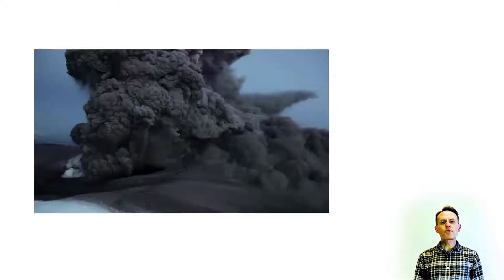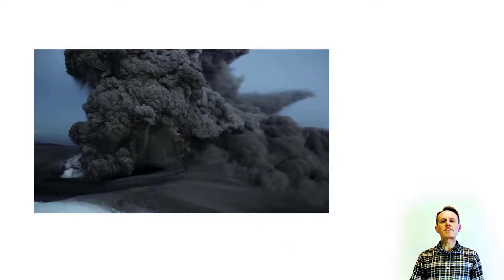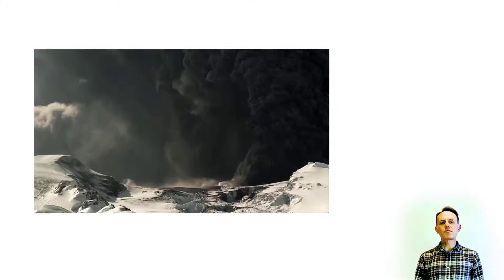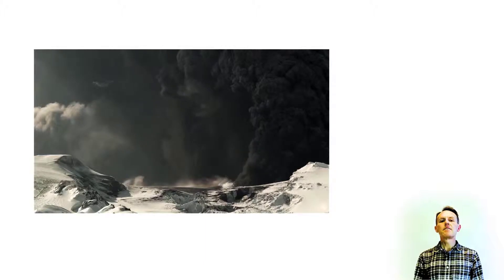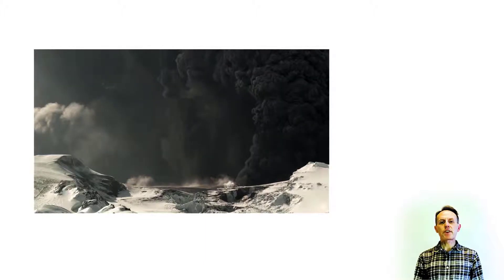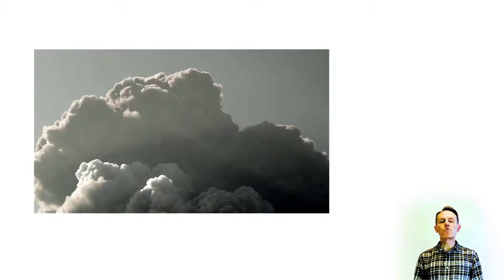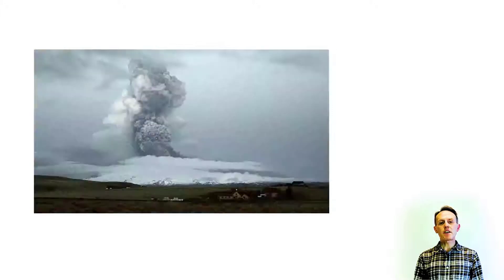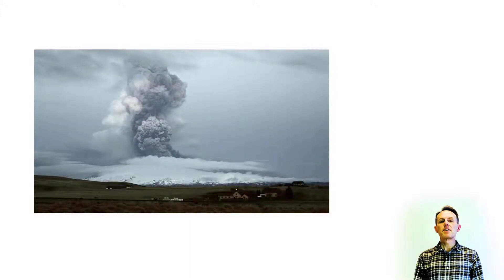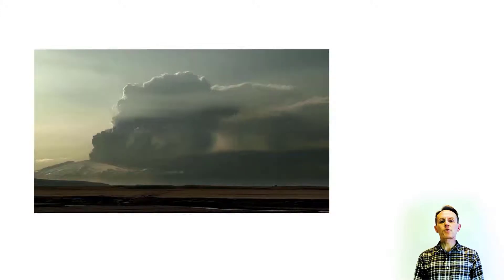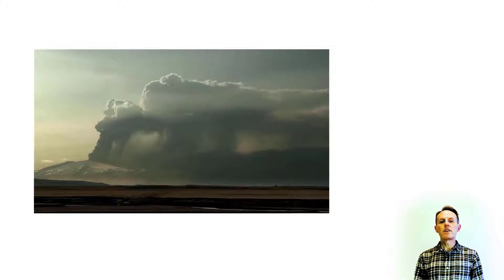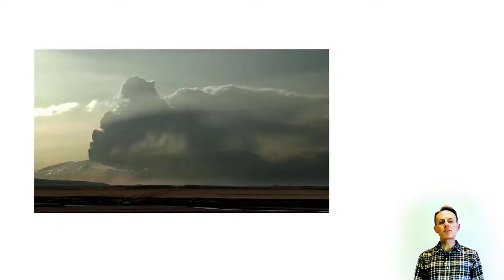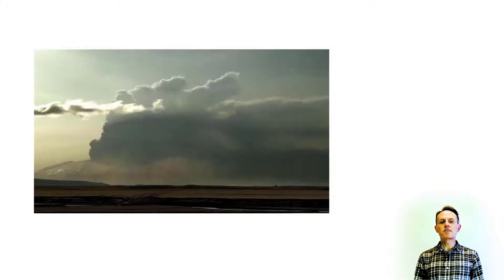The style of a future eruption at a volcano will very strongly depend on the physical properties of magma. If you want to understand what can happen on volcanoes in the future, you need to look at what has happened in the past. What is the geological history of a volcano and how is that influenced by their tectonic setting?